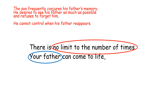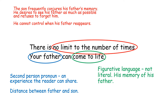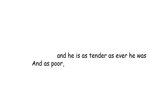The next thing I'd like to draw your attention to is that Emyr Humphreys uses the word your. The word your is a second person pronoun. He's not referring here to my father, which would be a tender, warm image. He's very much suggesting that this is your father — perhaps this is an experience that the reader can share. It could also further show the gulf of distance between the father and son, as he doesn't refer to this person as my father. If we take a look at can come to life — this is figurative language being used. It's not literal. This is the memory of his father that keeps coming to life.